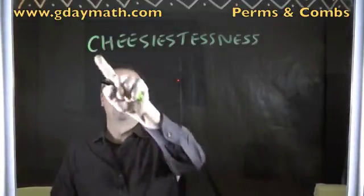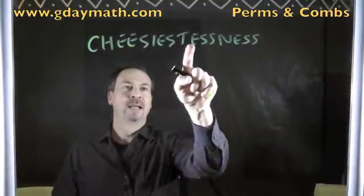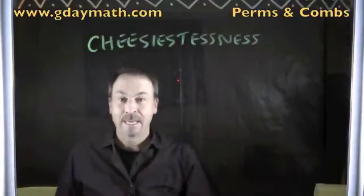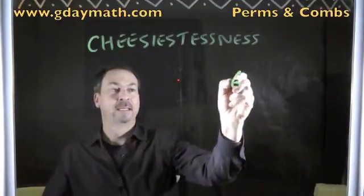Okay, first of all, it's 1, 2, 3, 4, 5, 6, 7, 8, 9, 10, 11, 12, 13, 14, 15, 16 letters long. If those letters were distinct, I know the answer would be 16 factorial.